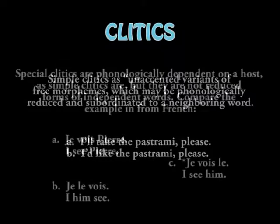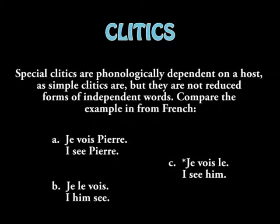The next is special clitics. Special clitics are phonologically dependent, as simple clitics are, but they are not reduced forms of independent words. For example, in the French language, as shown here, you can read the example yourself. We can see that the subject clitic pronoun, like 'le' or 'li' in French, is written as a separate word. Clitics are interesting both syntactically and morphologically, precisely because they share characteristics of both bound morphemes and syntax.